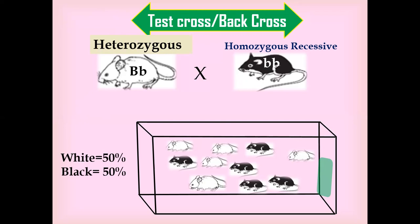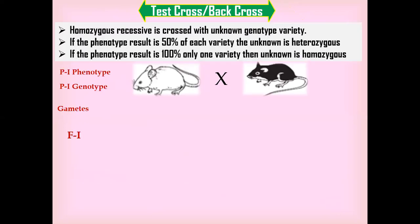To summarize this cross: the homozygous recessive is crossed with the unknown genotype variety. If the result is 50% of each variety, the unknown is heterozygous. But if the result is 100% showing only one dominant trait, the unknown variety is homozygous dominant.